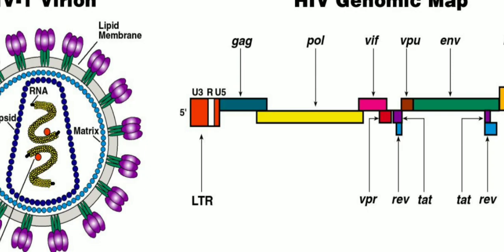The next structural gene is the POL or polymerase gene. This gene encodes for the viral enzymes reverse transcriptase, protease and integrase. The precursor protein is cleaved into three proteins: P31, P51 and P66. The next structural gene is the ENV gene or the envelope gene. The envelope gene encodes for the envelope glycoprotein GP160, which is the precursor protein. GP160 is cleaved into two components: GP120, the main receptor of HIV, and GP41, which is the fusion protein.